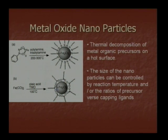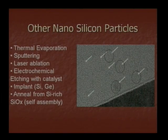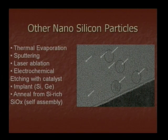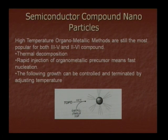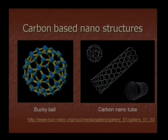To create nanosilicon particles, cubic silicon nanocrystals are made by PE-CVD — thermal evaporation of silicon chips and collection of nanoparticles in a cold chamber. Other nanosilicon particles can be made by thermal evaporation, sputtering, laser ablation, electrochemical etching with catalyst implant, for example silicon and Ge/Ni from silicon-rich SiOx, and self-assembly. Semiconductor compound nanoparticles: using TOPO at 350°C, cadmium particles can be made. High temperature organometallic methods are still the most popular for both 3-5 semiconductor and 2-6 compounds. Thermal decomposition is a very useful method.